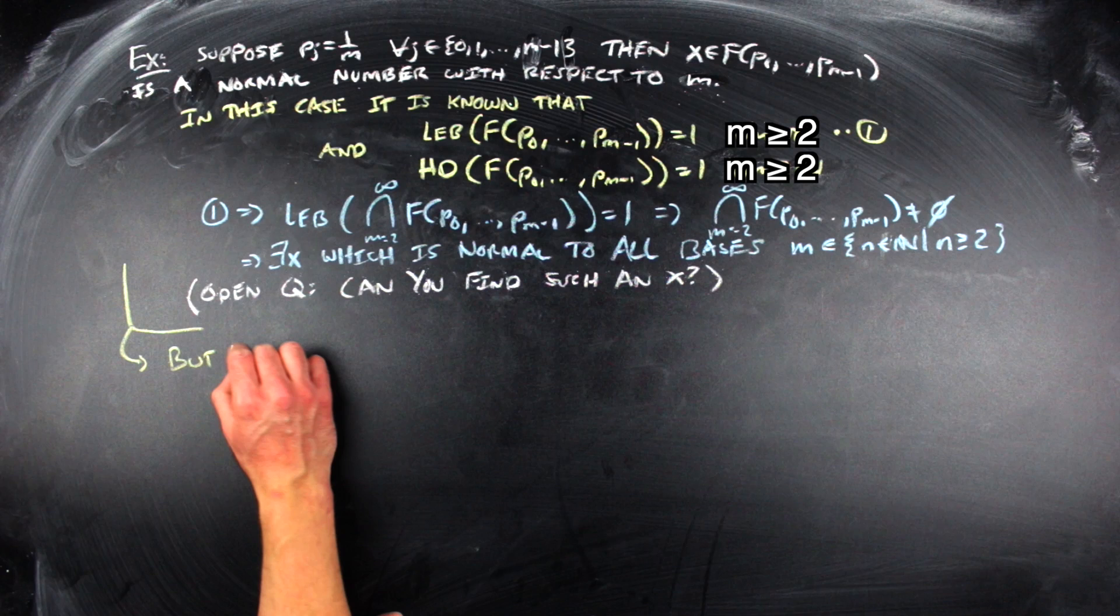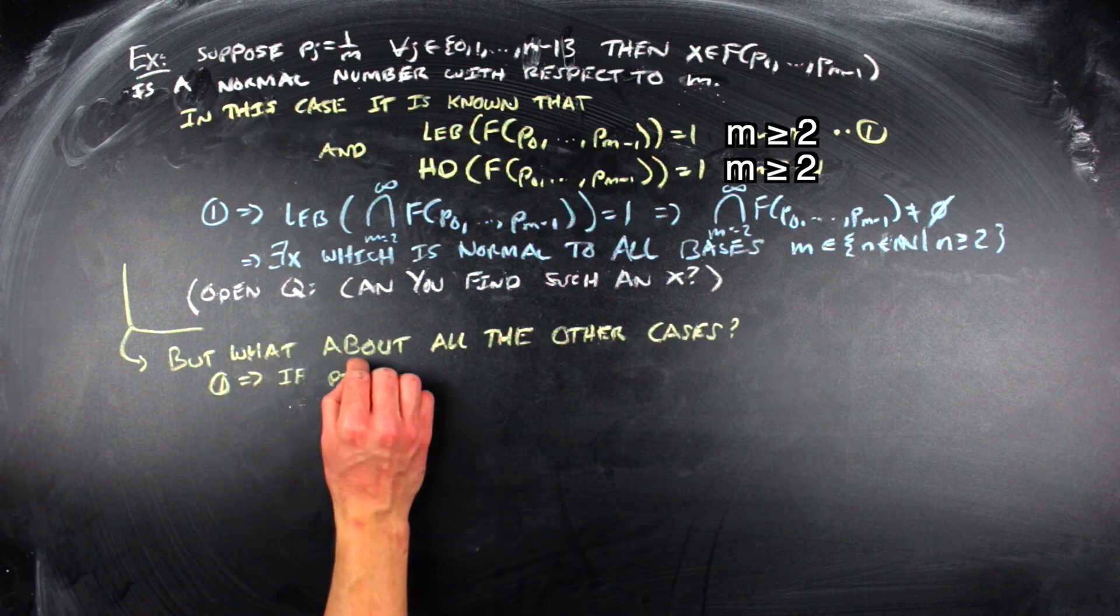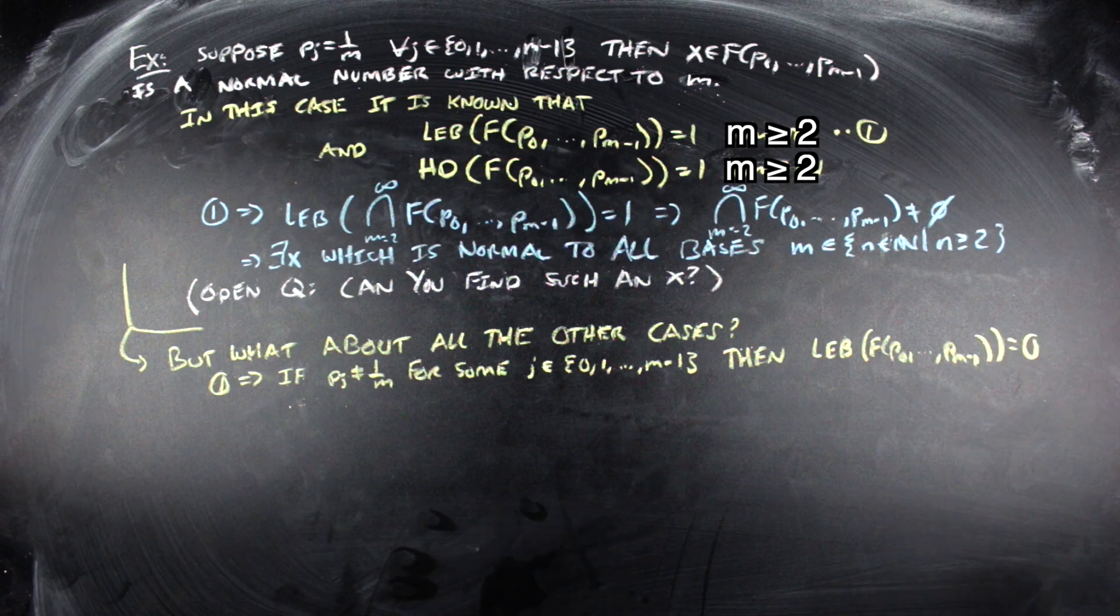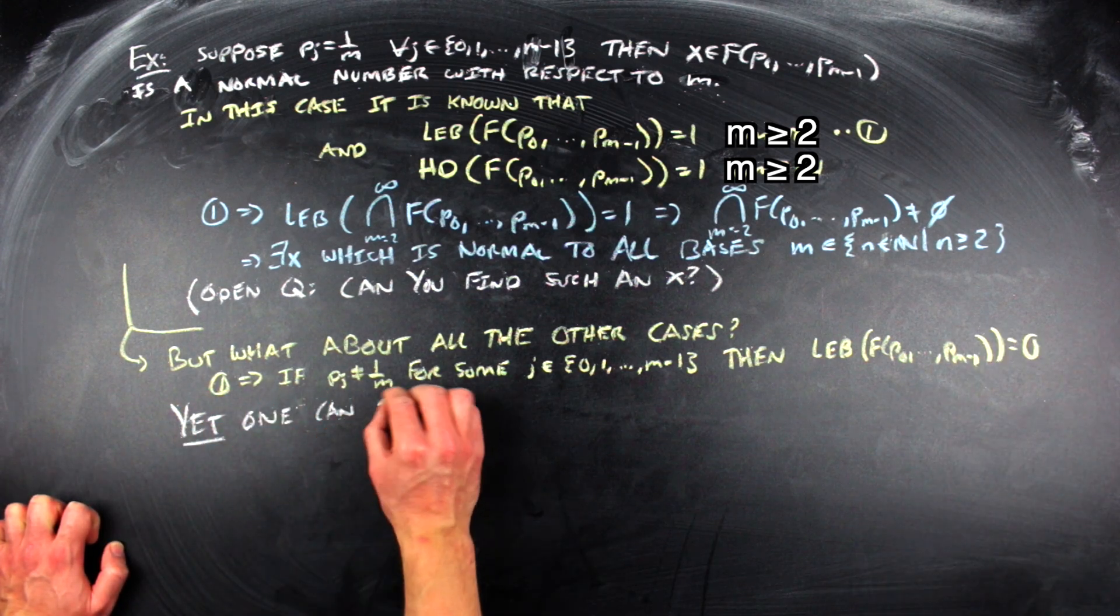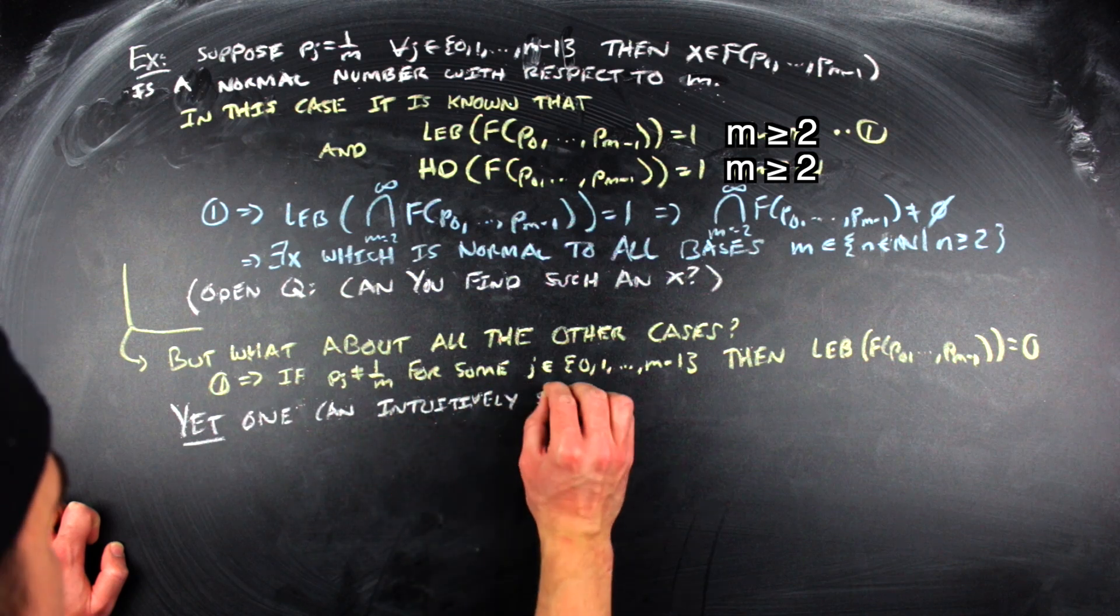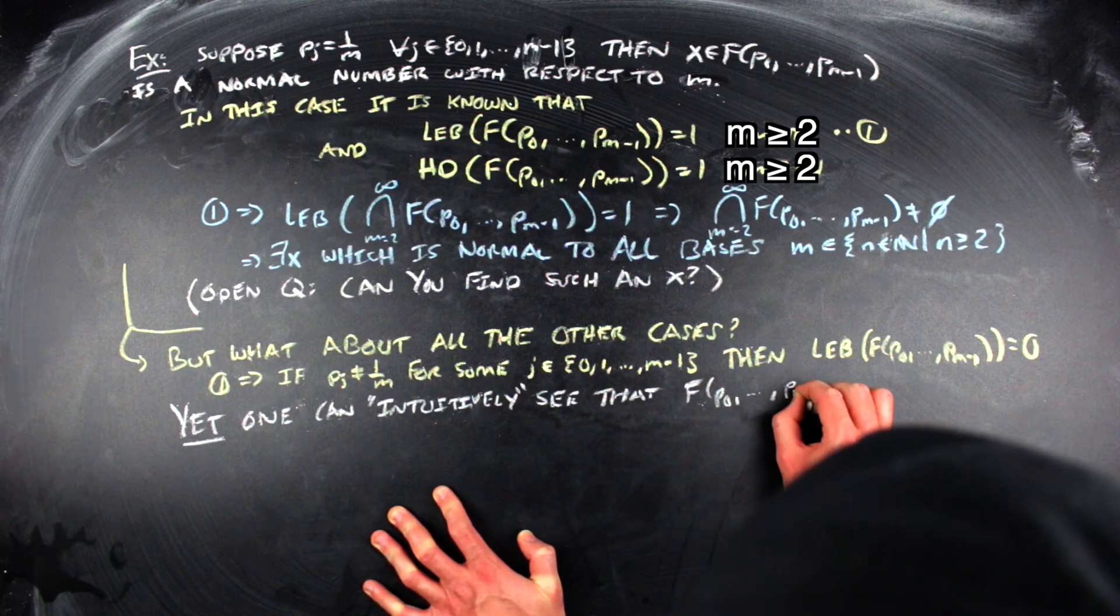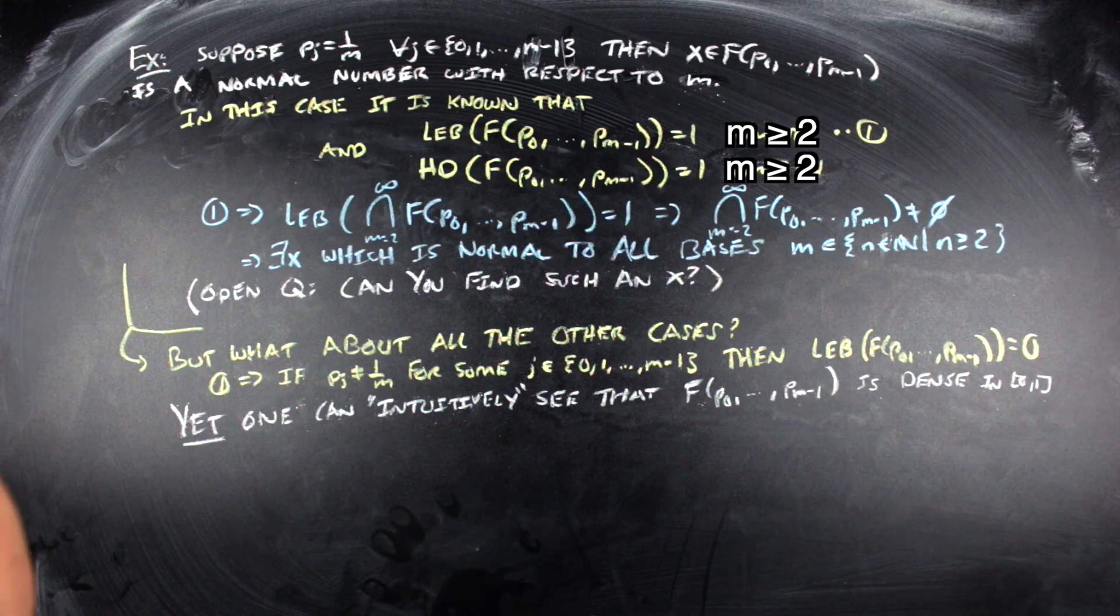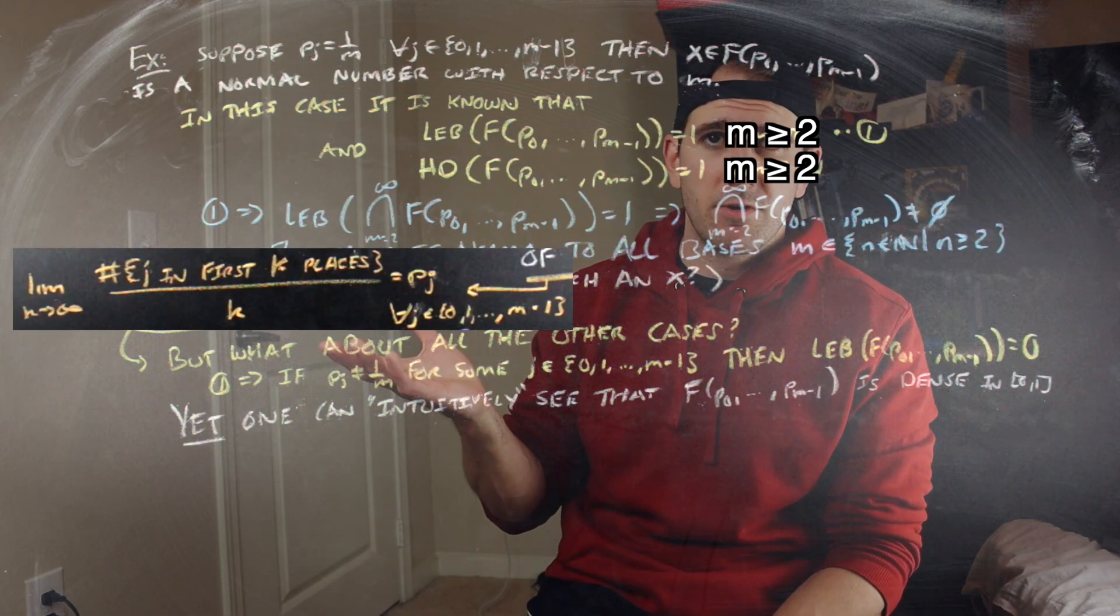But what about everything else? Because there's a set for every particular probability vector that you could throw in there, if you pick one that's not the normal probability vector, not the one where everything has the same proportion, we can see intuitively that all of these sets are dense in the unit interval from zero to one.